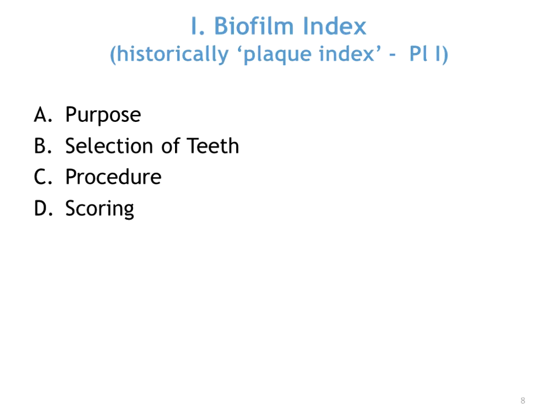Now let's get into some of the indices. We have the biofilm index, which was historically called the plaque index, or PLI. This is used to assess the thickness of biofilm in the gingival area — strictly a biofilm score in the cervical or gingival area. The entire dentition or selected teeth can be examined. You want to dry the teeth off. You evaluate dental biofilm on the cervical third only — not the middle or incisal thirds. A probe is used to test the surface when no biofilm is visible.